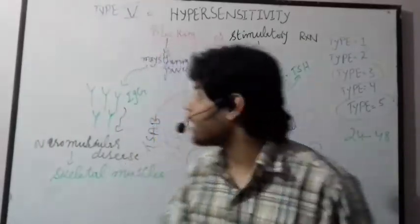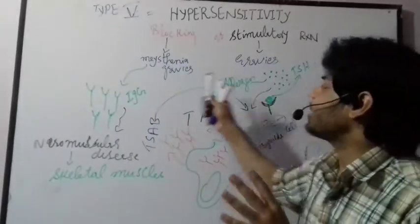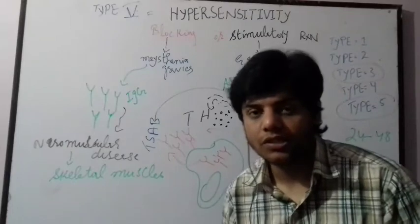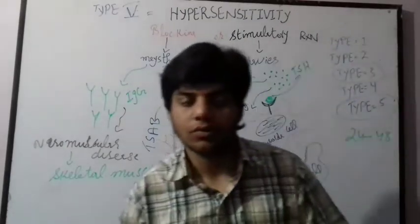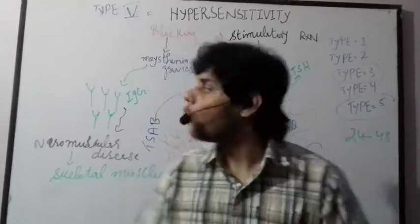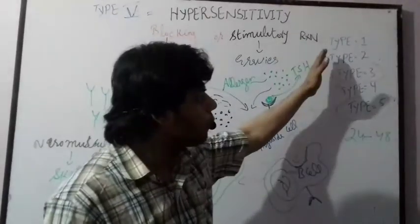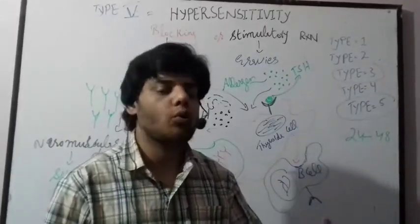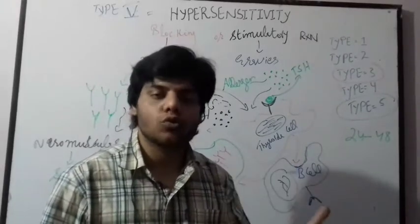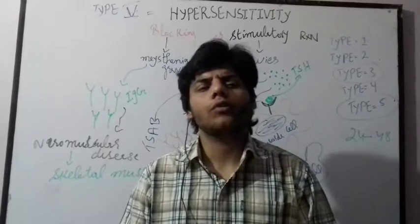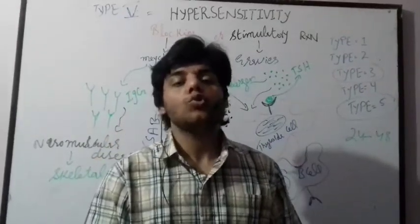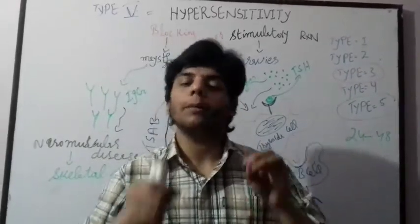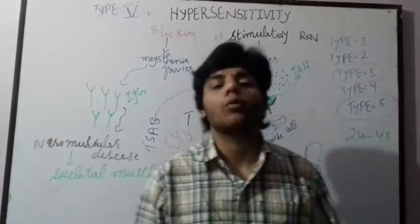So Type 5 hypersensitivity usually causes Graves' disease and Myasthenia gravis. That is all about Type 5 hypersensitivity. In each type of hypersensitivity from Type 1 to Type 5, we focus on antibodies, cells, amino cells, and immunity. In upcoming video lectures, we are going to cover basic immunology.